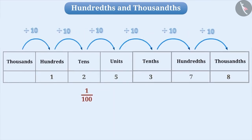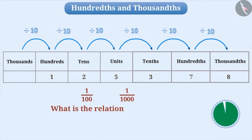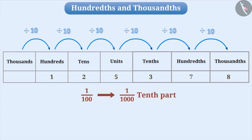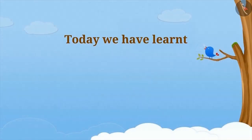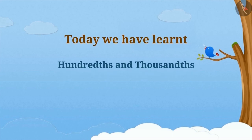So, what is the difference between one-hundredth and one-thousandth? Think for a while. Let me tell you. One-thousandth is the tenth part of one-hundredth. That means, one-thousandth is ten times smaller than one-hundredth. Today, we have learnt about hundredths and thousandths. In the next video, we will learn about conversion of fraction into decimal and vice versa.